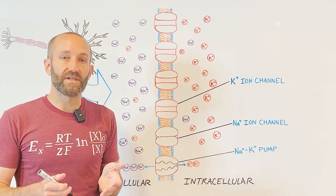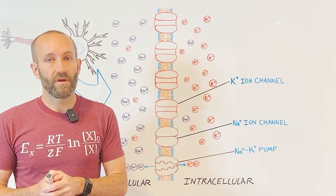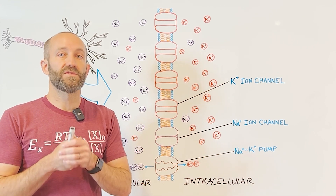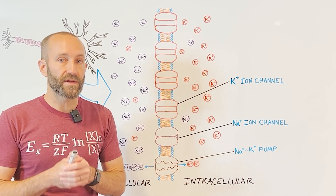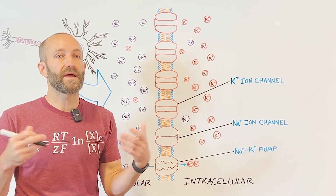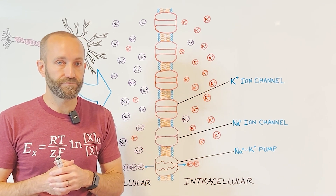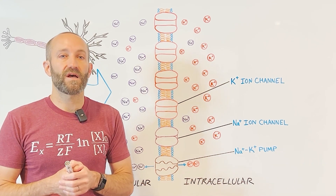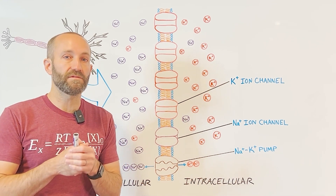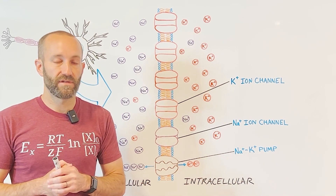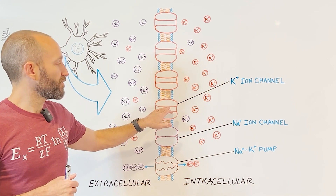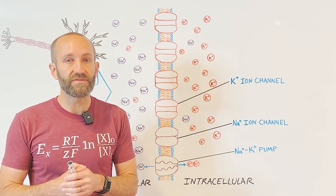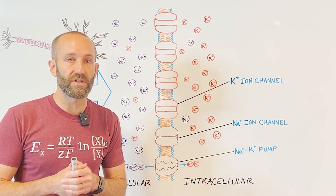Additionally, some ion channels stay open all the time, while others open only in response to specific stimuli or signals, such as the binding of a neurotransmitter to a receptor. The channels that stay open all the time are sometimes called leak channels. Neurons have a large number of potassium leak channels, and relatively few sodium leak channels.